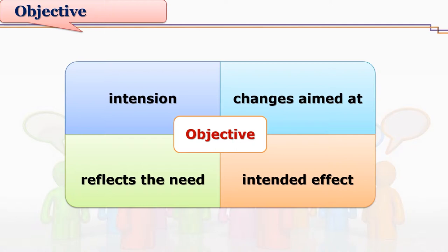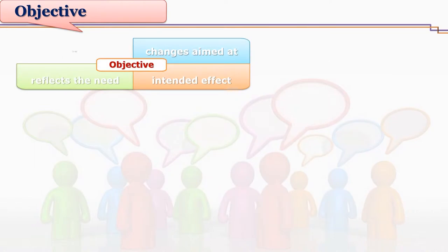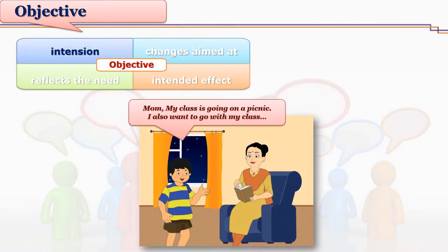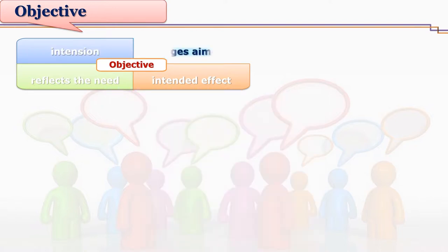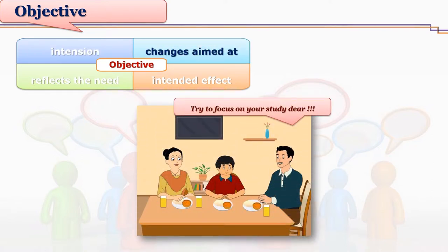Why do we communicate? What are the various objectives of communication? We may have some intention in mind to start communication. For example, Raga wants to seek permission of his mother for a picnic, so he starts talking with her. The need initiating dialogue with his mother is the intention to seek permission. This is how, because of some intention, we start communication.